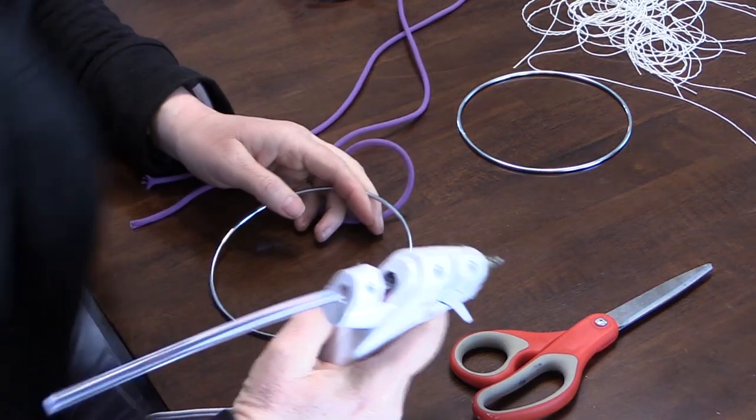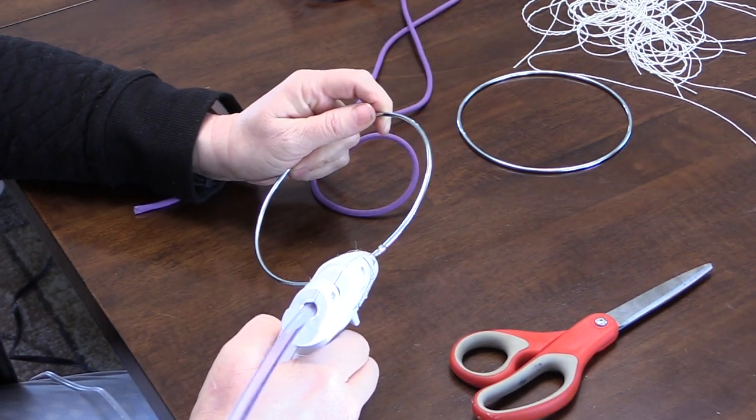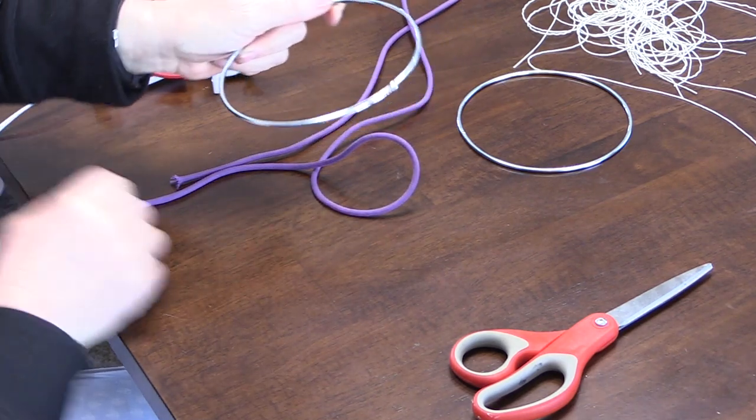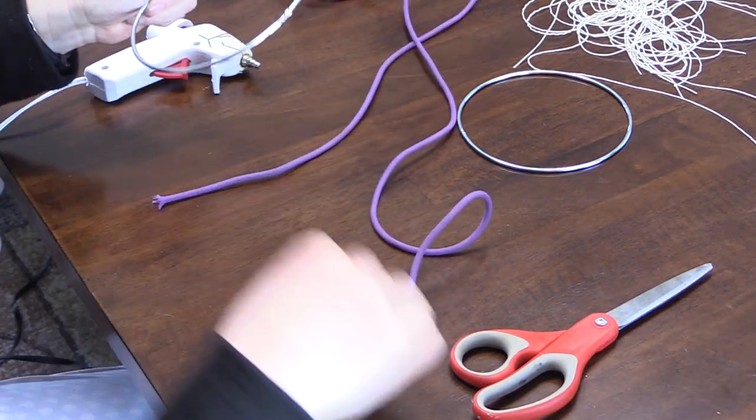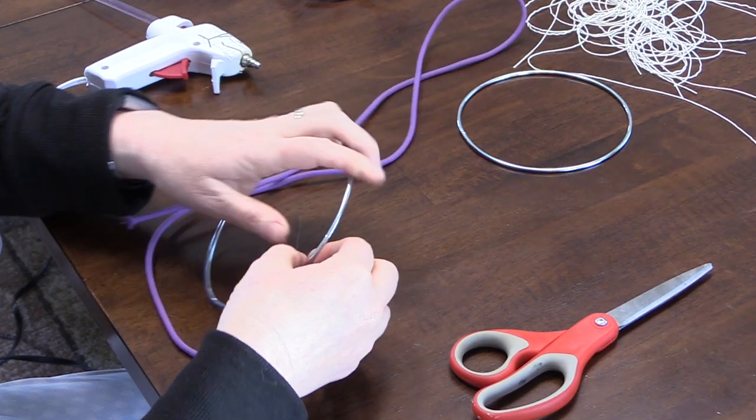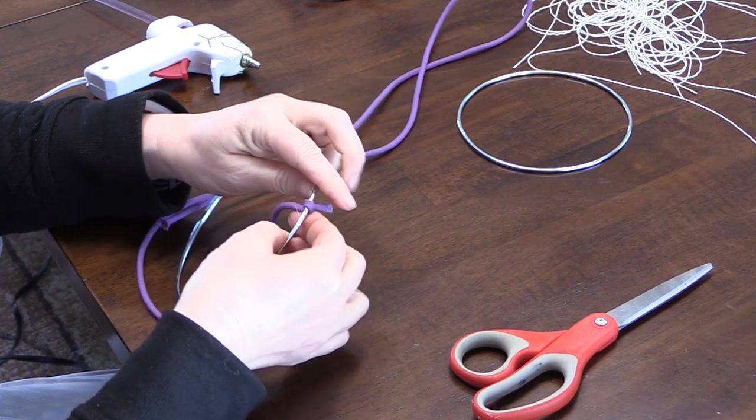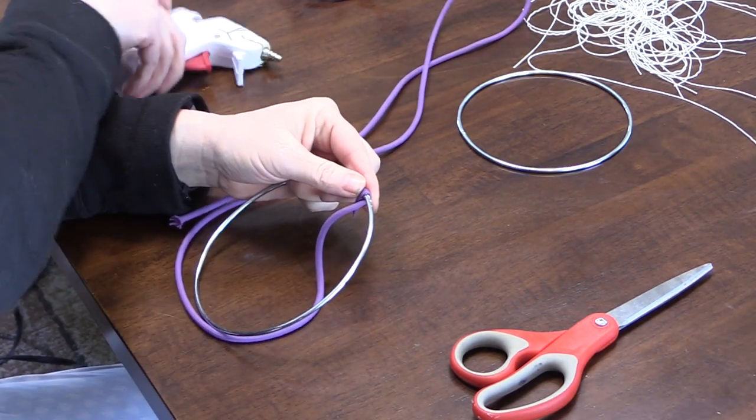You could use whatever size ring you want to for this. I really like this four inch size ring, it worked really well for me. And you don't necessarily have to use paracord either, you can use jute twine, you can use leather, you can use pretty much anything that you want to wrap around the ring. I just happened to have the paracord and I liked the color so that's what I used.